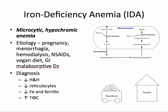In this image, I've shown the steps to heme synthesis within the mitochondria. I want you to notice that iron is involved in the last step — converting protoporphyrin 9 under the influence of ferrochelatase into heme. Without iron, this last step cannot occur and heme will not be synthesized.